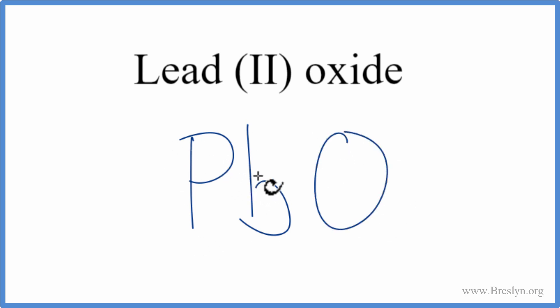Lead is a metal, it's a transition metal. Oxygen, that's a non-metal. When we have a metal and a non-metal, we have an ionic compound.